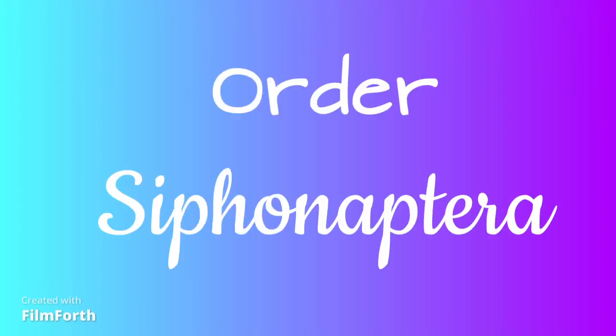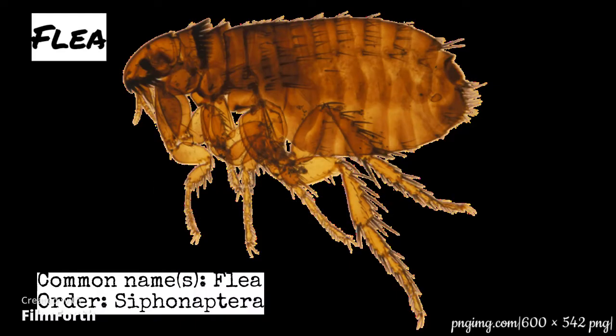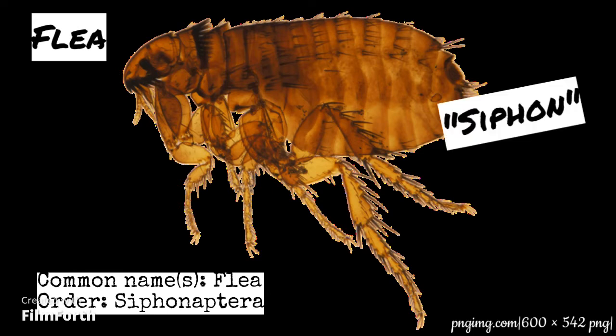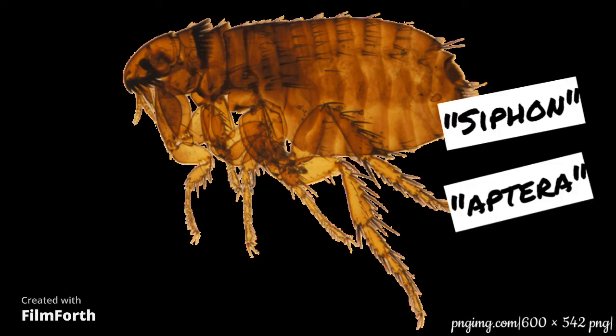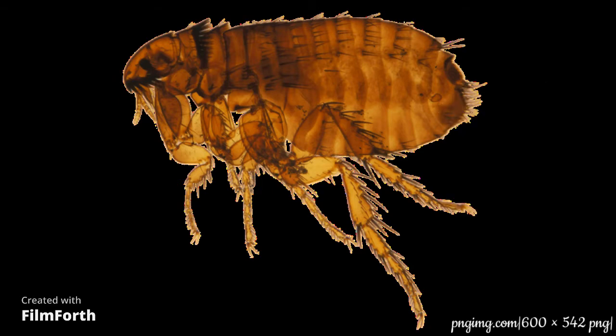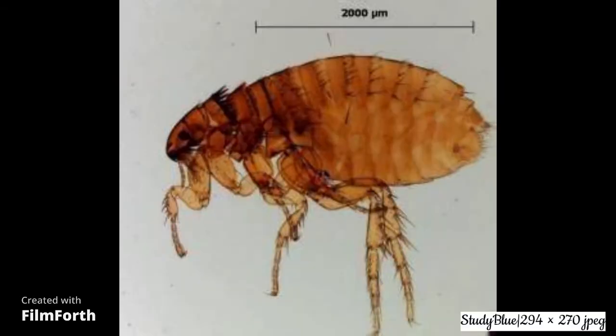Orders Siphonoptera. Siphonoptera is derived from the Greek words siphon, meaning a tube or pipe, and aptera, meaning wingless. This is an appropriate appellation for these secondarily wingless insects whose mouthparts are adapted for piercing skin and sucking blood.